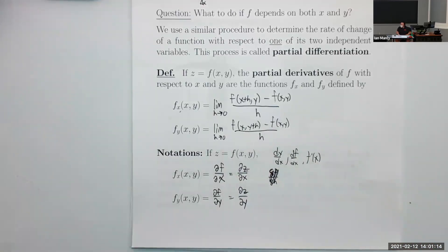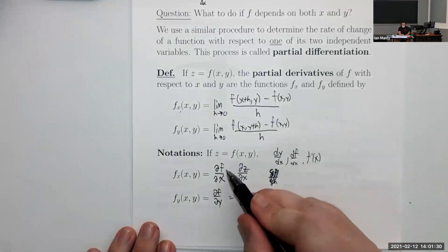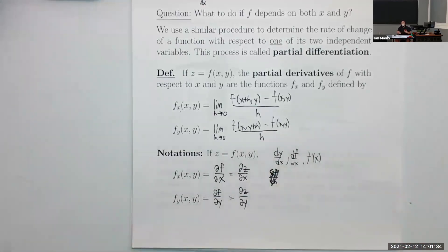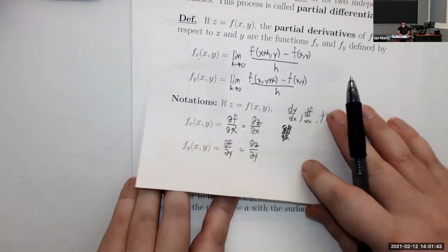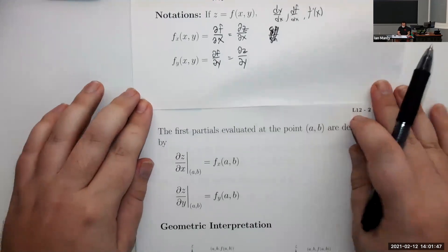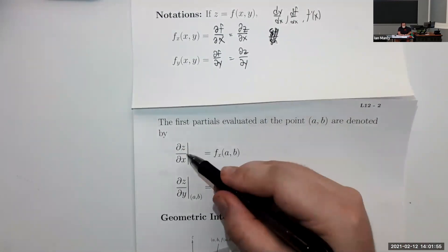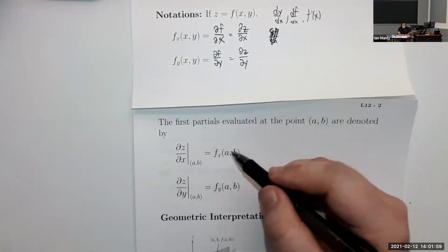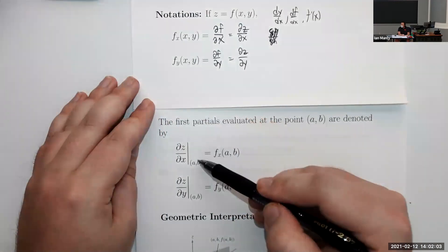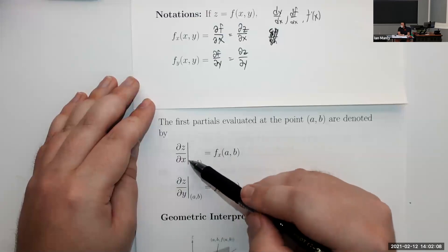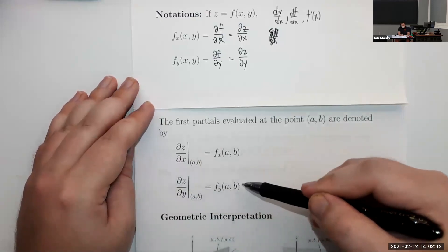If we want to express a partial derivative at a particular value, like maybe the partial derivative with respect to x at the point (a, b), then we simply substitute in a, b. Or if we're using the partial notation with the curly d's, we put a line and then whatever point we're at. The same thing works for y as well.